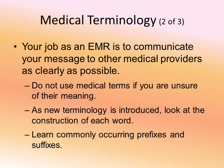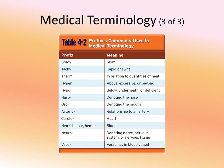As new terminology is introduced into the course and into your vocabulary, the best way to figure out what it means is to break it down — look at the root, the prefix at the beginning of the word, and the suffix. For example, brady means slow, tachy means fast. Bradycardia means slow heart rate, tachycardia means fast heart rate. It can also be used with breathing — tachypneic is breathing fast, bradypneic is breathing slow. Go over that list, and there are more in your book as well. It's important to start getting an understanding of these terms so you can use them appropriately.